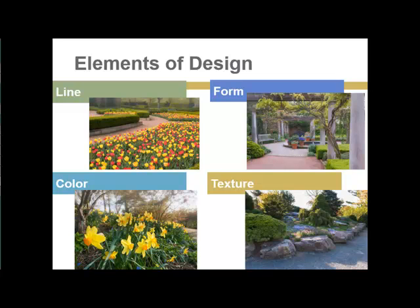In the second photo, form is highlighted — especially the vine growing up the massive trellis, which provides a great contrast to the plants in the containers in the center and cascading out of the garden beds to the left.